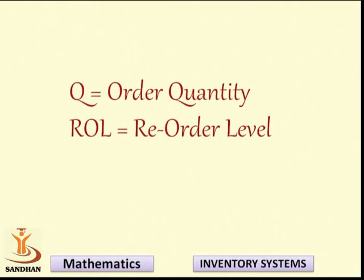ROL stands for reorder level — the level of inventory at which we know we need to place an order. For every item a reorder level can be fixed, and if a fixed order is placed at that level, we follow the fixed order quantity system. The reorder level alerts us that we are running out of stock and need to place an order for replenishment.